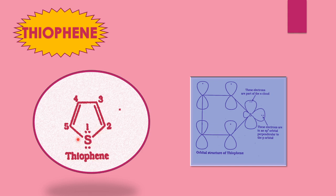This type of structure is a thiophene structure. See the next structure — here is the orbital structure of thiophene. This structure shows a p-orbital and here is also presence of the p-orbital. Two orbitals are shown here. One of the orbitals is perpendicular to the other orbitals. This electron is part of the pi-cloud.